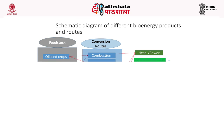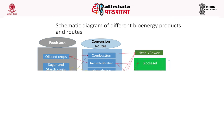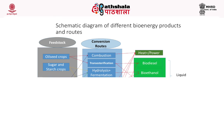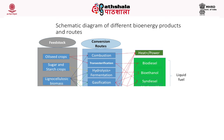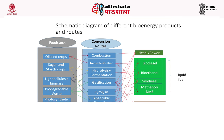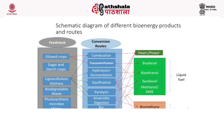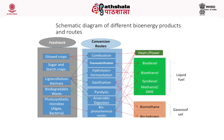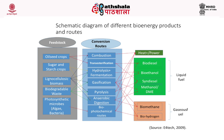This schematic diagram shows different bioenergy products and their conversion routes. Oil seed crops can be converted by combustion (producing heat and power) or transesterification (producing biodiesel and syndiesel). Sugar and starchy crops are mainly converted by hydrolysis and fermentation to produce bioethanol. Lignocellulosic biomass, after pre-treatment and fermentation, produces bioethanol; it can also undergo gasification, combustion, pyrolysis, and anaerobic digestion, with products varying accordingly.